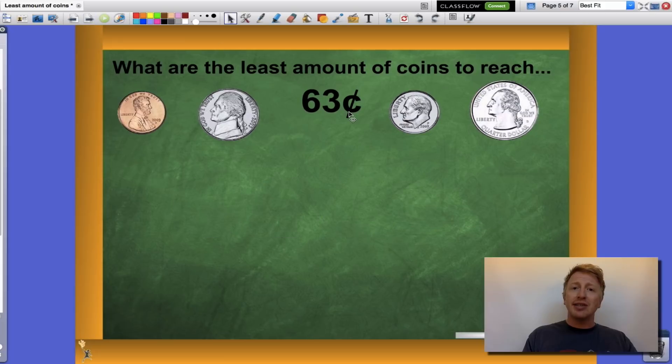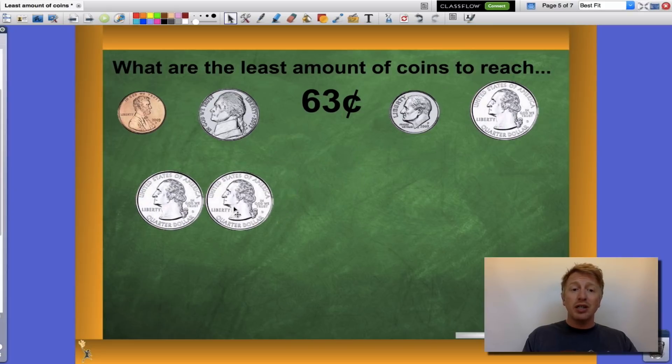One last problem, guys. Sixty-three cents. What is the least amount of coins to reach this value? Again, I'm starting over here with my largest one. I have one quarter with twenty-five cents, and I can actually fit in one more quarter to reach fifty cents. Now, if I added one more quarter, I would be too high. I'd be at seventy-five cents.